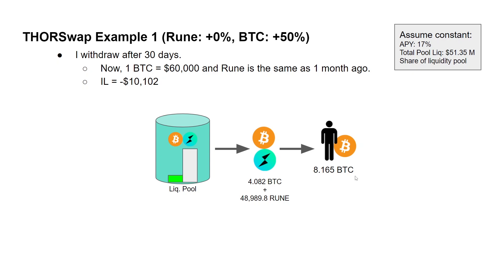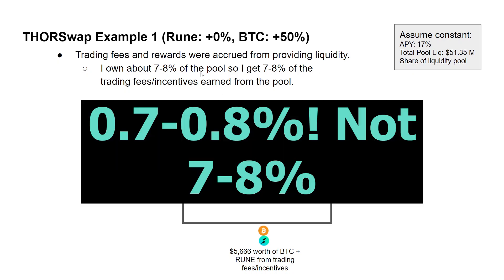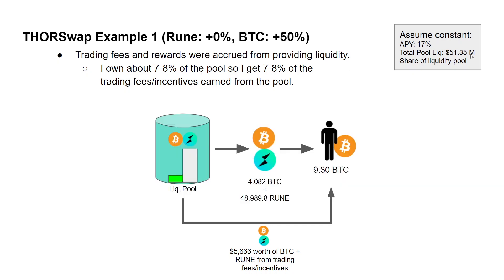But that's not the entire story. I also get trading fees and rewards for providing liquidity. I own about 78% of the pool. Using the APY and the total liquidity in the pool, I calculate the total annual rewards and extrapolate to my 30-day share, which comes out to $5,666 worth of Bitcoin and RUNE from trading fees and incentives. That gets converted to Bitcoin and added to my withdrawal total, now 9.3 Bitcoin.